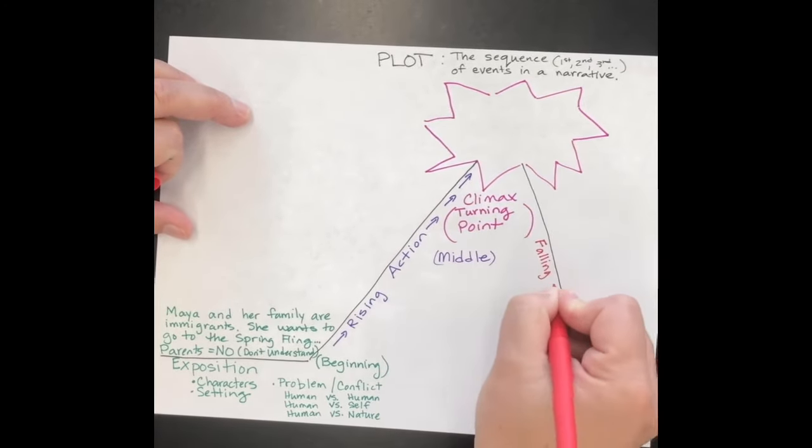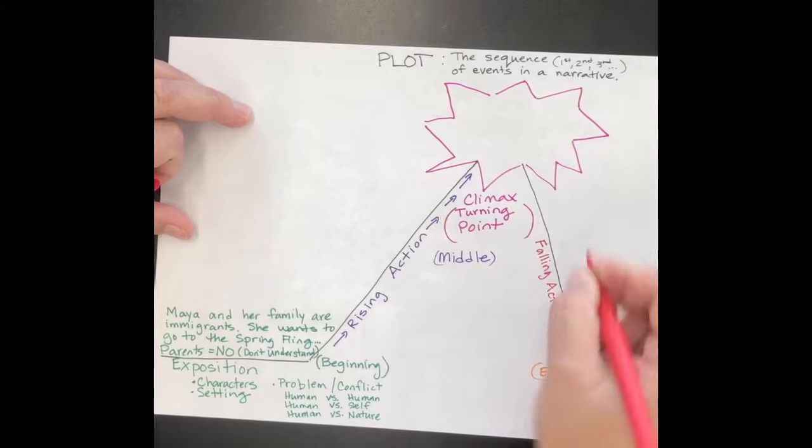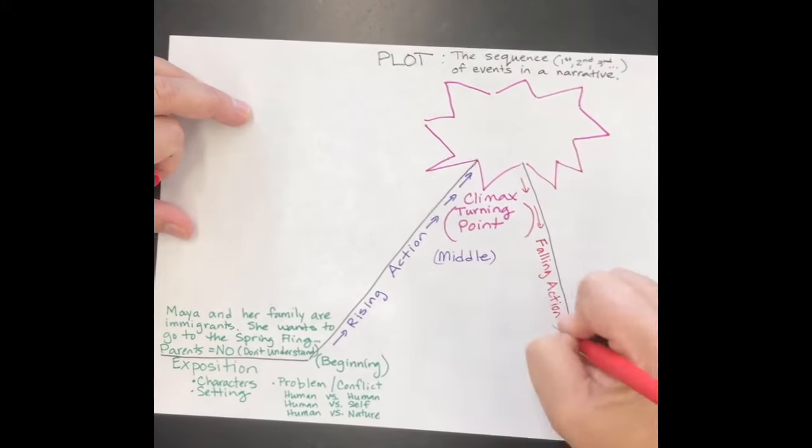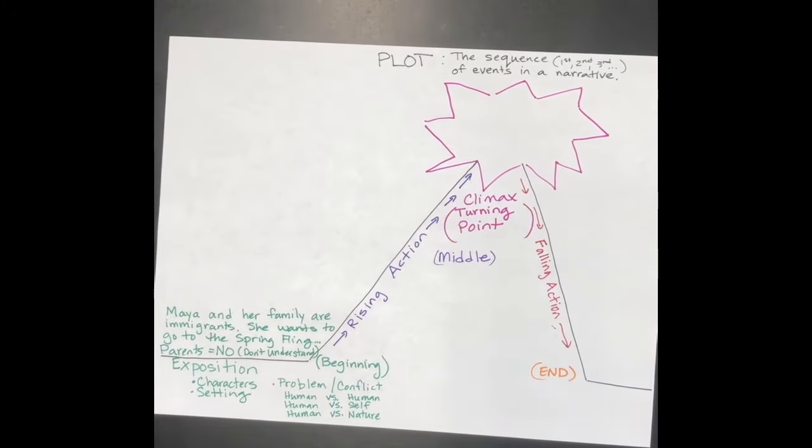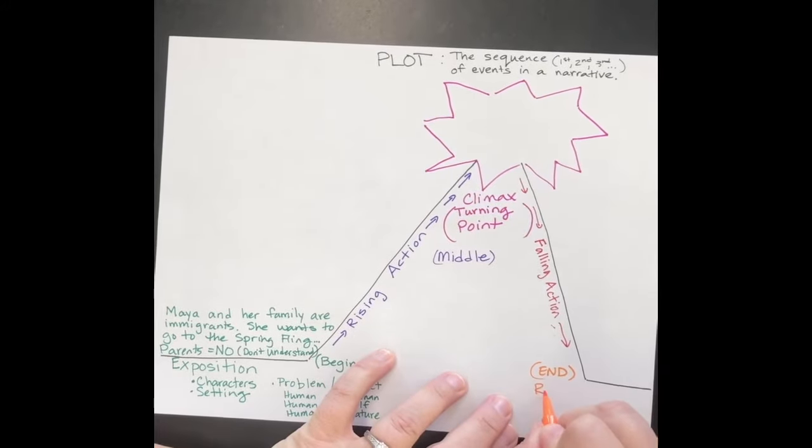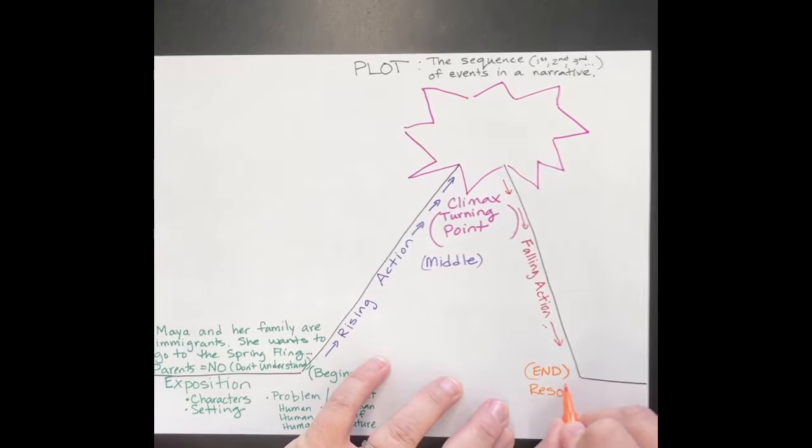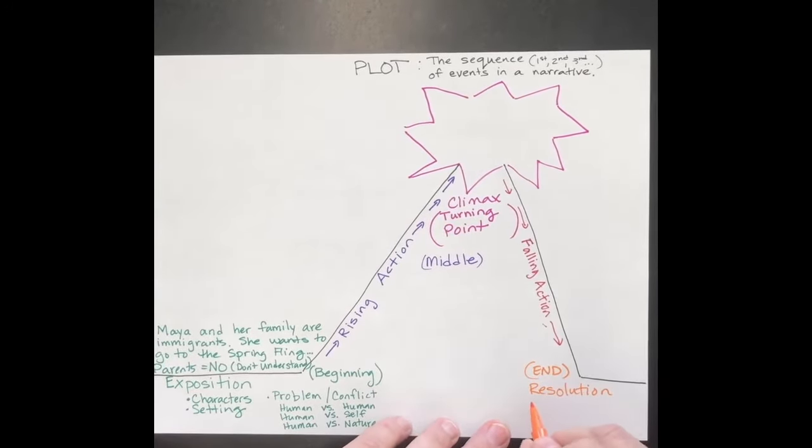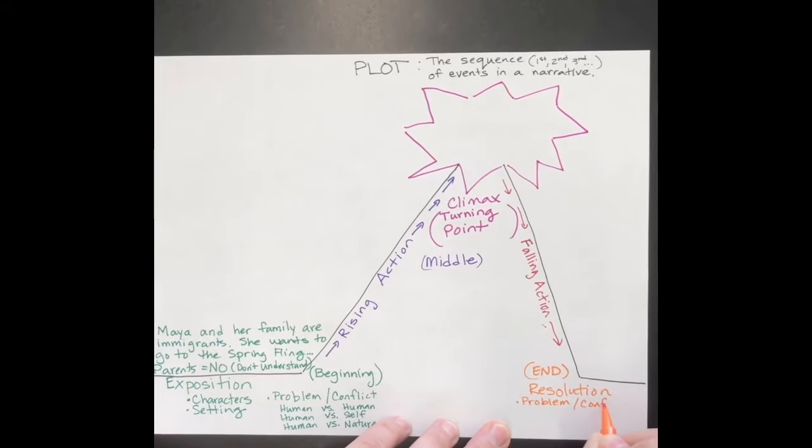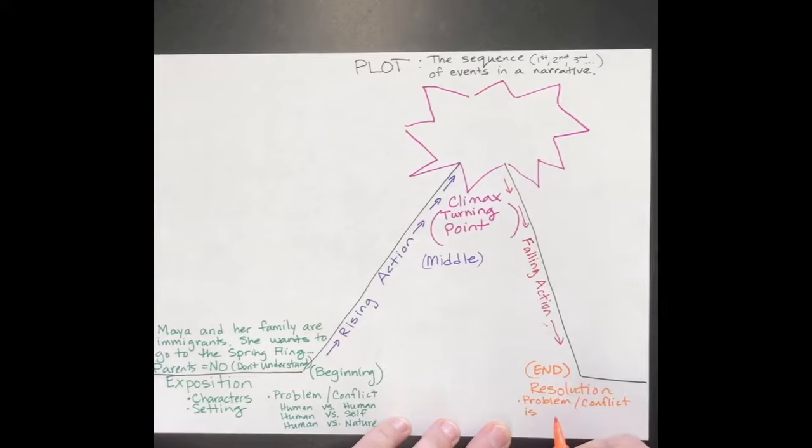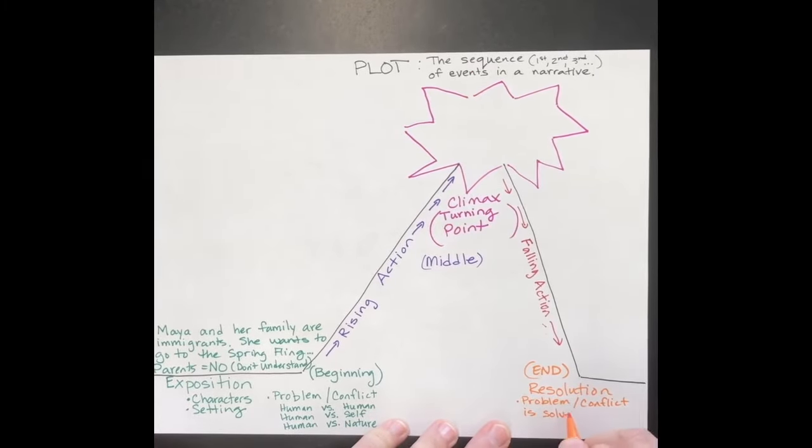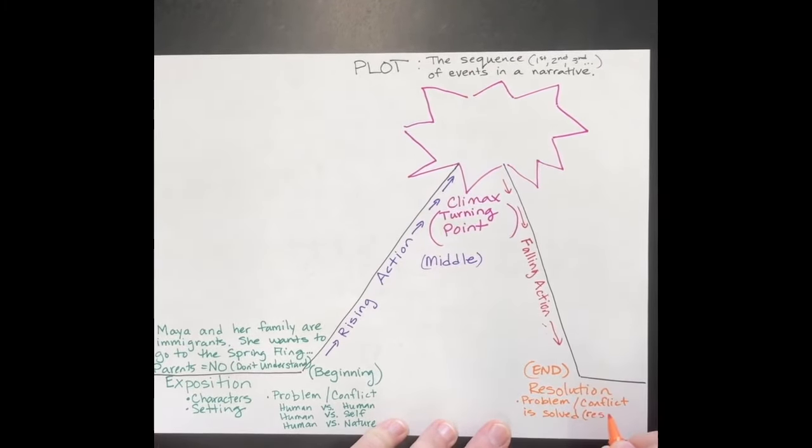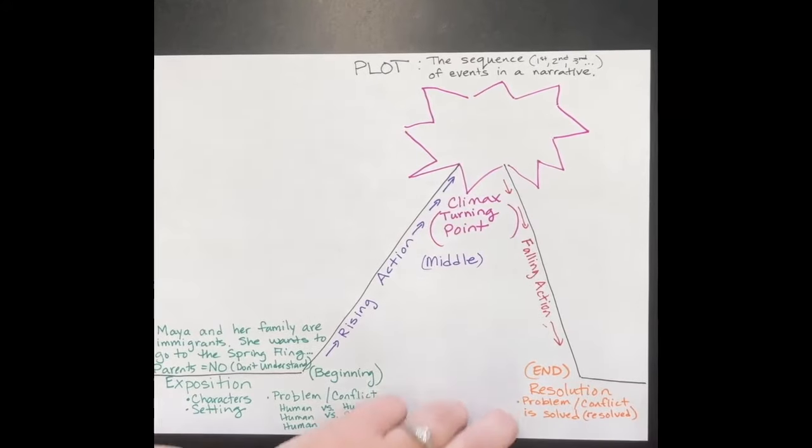Then you have the falling action. The story is starting to come to an end. You start seeing how the problem is being solved. Then you get to the end, which we call the resolution. It's where the problem or conflict is solved or resolved. You can see 'resolved' is in the root of resolution.